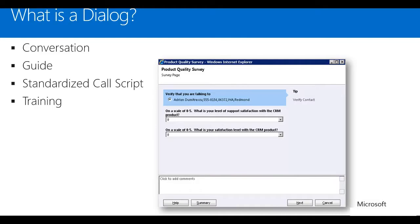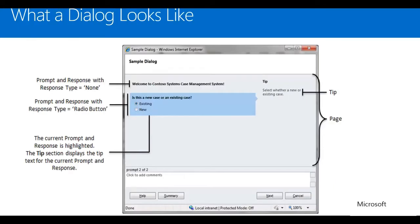A dialogue is kind of like a conversation, a guide, or a call script. If you think of customers doing cold calling, they may want a script that end users will go through so each call is consistent, recording the same data and asking the same questions. A dialogue gives you that functionality to script out a conversation or offer some training. A dialogue contains a prompt and response — on the wizard, you have a prompt asking the user to do something, and they record their responses. You can choose whether to record the response or not, and there is also a tip section for end users.